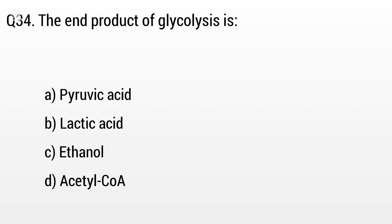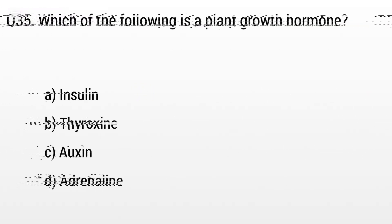Question 34. The end product of glycolysis is: Option A: Pyruvic acid, B: Lactic acid, C: Ethanol, D: Acetyl coenzyme A. The right answer is option A, Pyruvic acid.